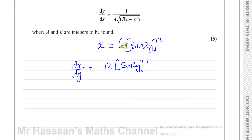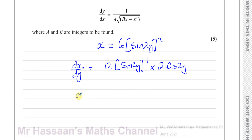The main function is something squared, so to differentiate that, you multiply by the power — 2 times 6 — take 1 from the power, then multiply by the differential of what's inside. The differential of sine 2y is cosine 2y, and then you also multiply by the differential of 2y, which gives 2 cosine 2y. Tidying up: dx/dy equals 24 times sine 2y times cosine 2y.